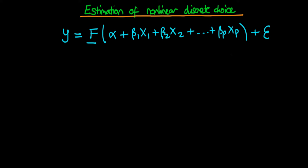If we were thinking about this in the same way as least squares, what we might do is try to minimize the sum of the estimated errors. So what we would do is minimize the sum across all i of epsilon_i squared. What would epsilon_i squared be in this context?